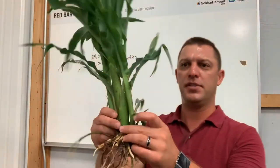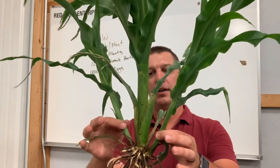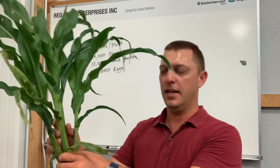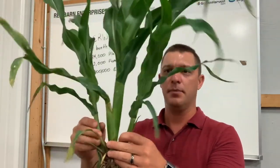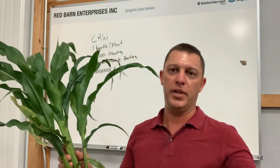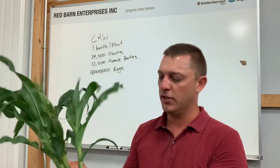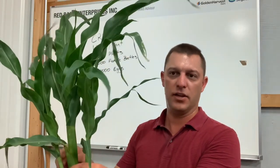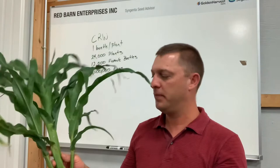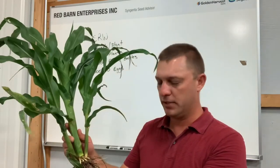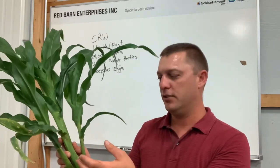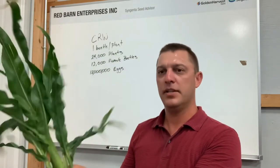Another thing we're seeing is tillering, and there's always the debate: is tillering in your corn a good thing or a bad thing? In some fields, the tillering is helping shade the ground during extremely hot weather, which is a good thing. It also helps suppress weed development in the field. On the other hand, some would say these tillers are robbing nutrients and water from the main stalk, resulting in lower yield — I'm 50/50 on it. Some hybrids tiller more than others, and sometimes you see tillers on single plants and not others, which is often due to in-row spacing.